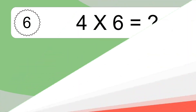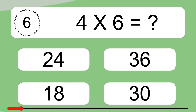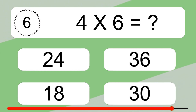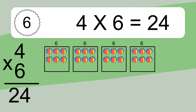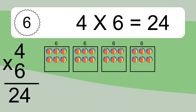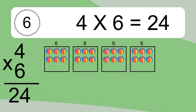4 times 6 equals what? 4 times 6 equals 24. We have 4 boxes, and each box has 6 colorful balls inside. If you count all the balls in all the boxes together, you will have 4 times 6 balls. This equals 24 balls.